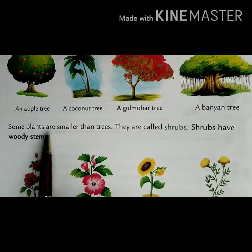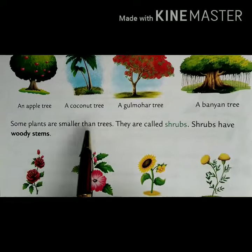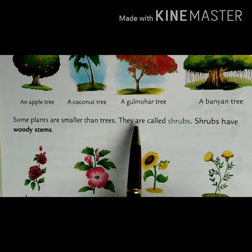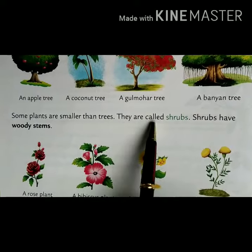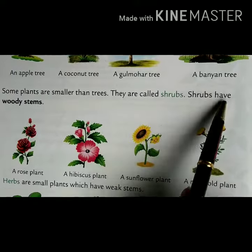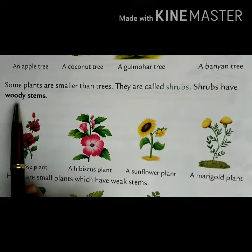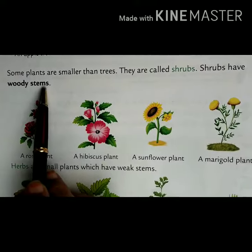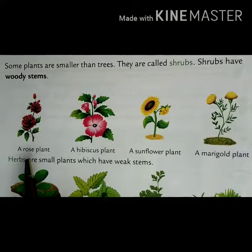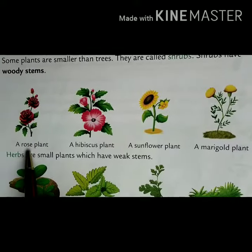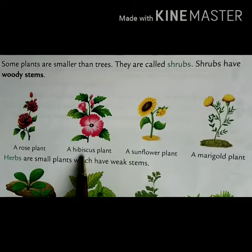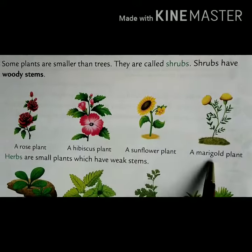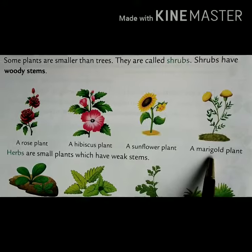Some plants are smaller than trees. They are called shrubs. Shrubs have woody stems. Examples are rose, hibiscus, sunflower, and marigold.